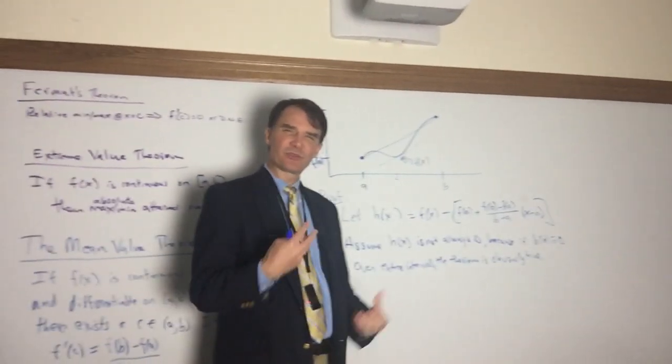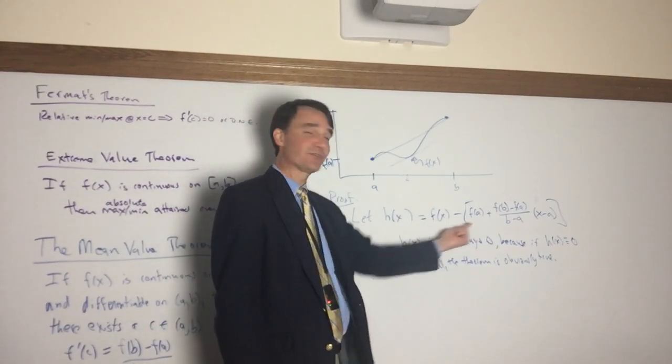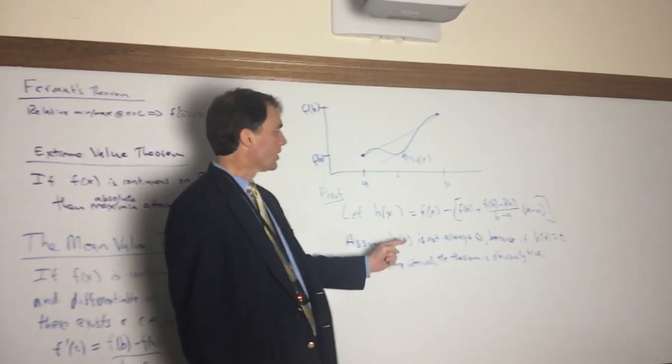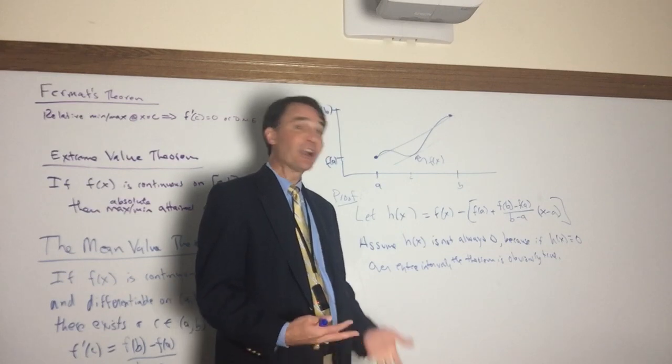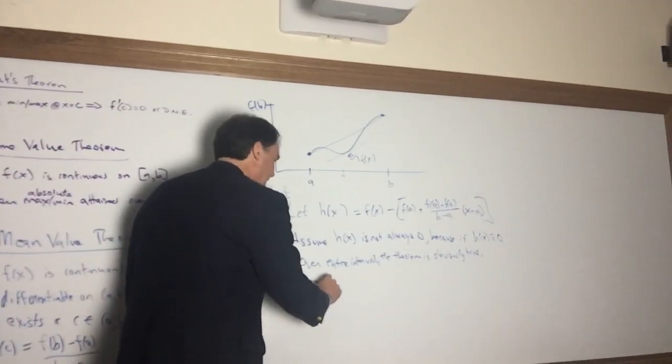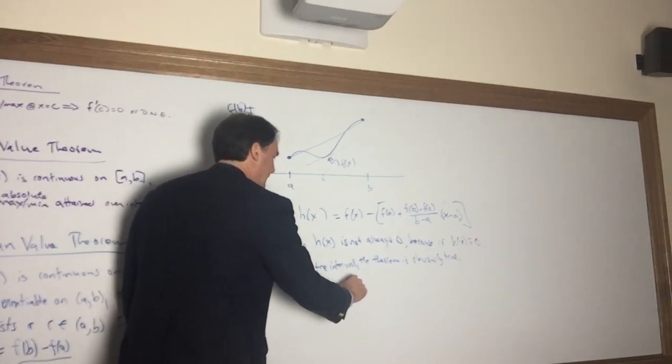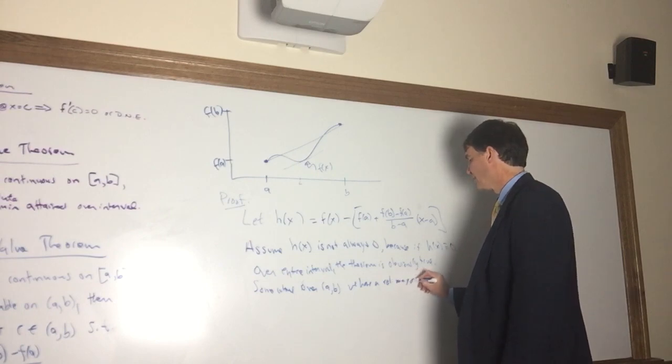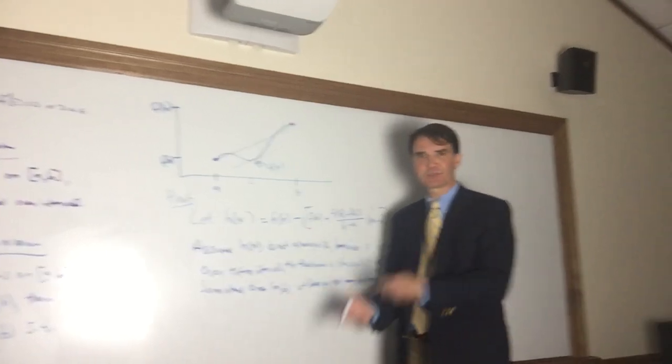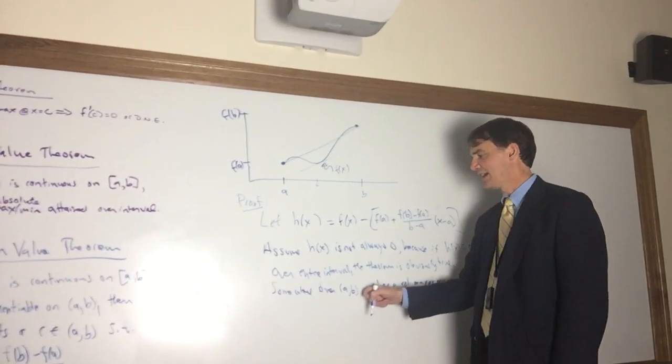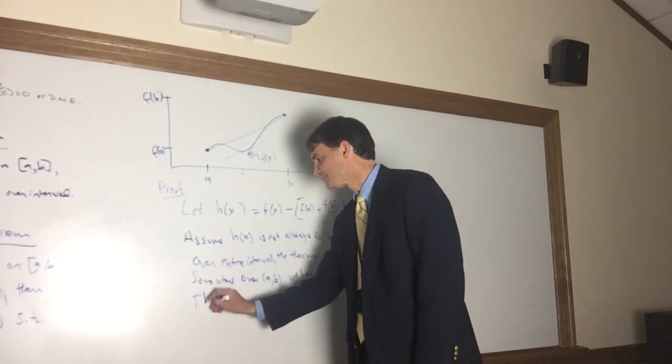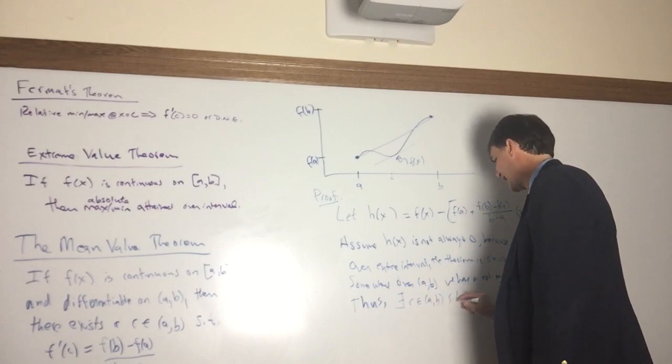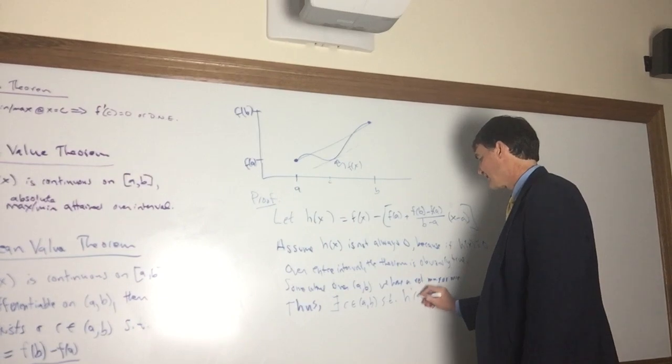So h(x) is not always zero. What does that mean for a function? And I should point out, h(x), because it's the difference of two differentiable and continuous functions, is itself a continuous function on the closed interval and differentiable on the open. So h(x) is a continuous function on a closed interval that goes somewhere other than zero. So somewhere over [a,b], we have a relative max or min, right? Because it rises up or sinks at some point, maybe both. So we must have a relative max or min because we have values that aren't zero somewhere in there. Thus, now here I'm going to use Fermat, there exists a c in (a,b) such that, well, it's differentiable everywhere, so h'(c) equals zero.